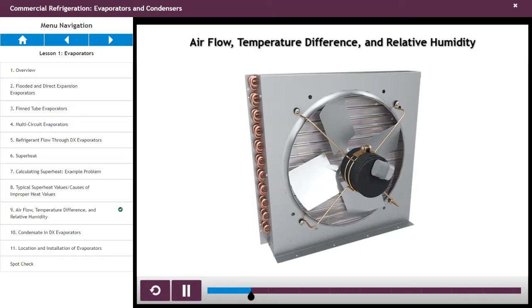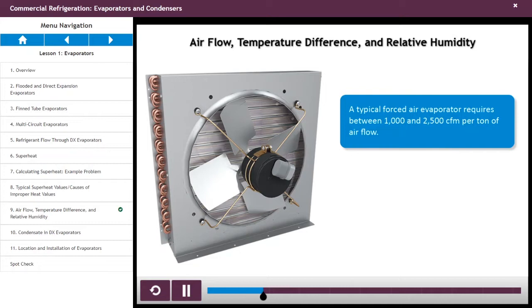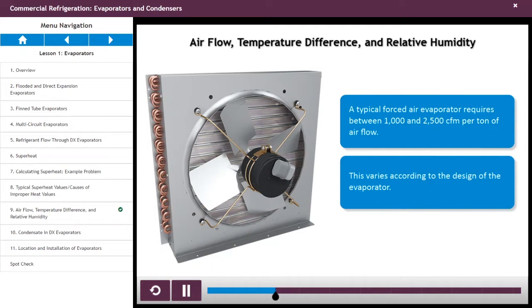A typical forced air evaporator requires between 1,000 and 2,500 CFM per ton of air flow, although it varies according to the design of the evaporator.